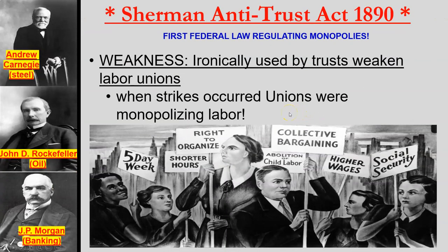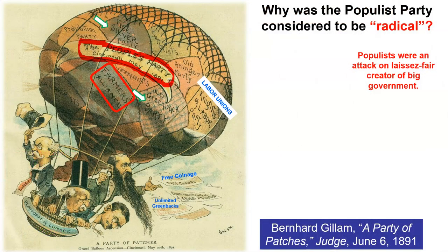The weakness of the Sherman Antitrust Act is that it was ironically used by big business and industry trusts to break up labor unions and stop strikes. They argued in courts that strikes are illegal because they monopolize a part of the economic system — specifically labor. Labor unions going on strike were said to be monopolizing their labor; therefore, strikes were illegal and unions had really no power at this point in time.